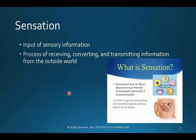Sensation is how we detect physical energy from the environment and encode it as neural signals. It is how we get the surrounding environmental signals and relay them to our brains. The sensation process is essentially an energy transformation — energy is converted. You have to understand that sensation is when we get the physical energy from outside and convert it into neural signals, then send it to our brain for processing.